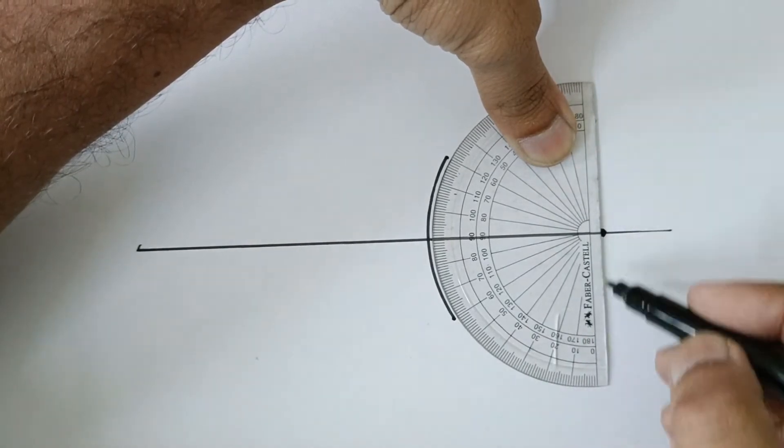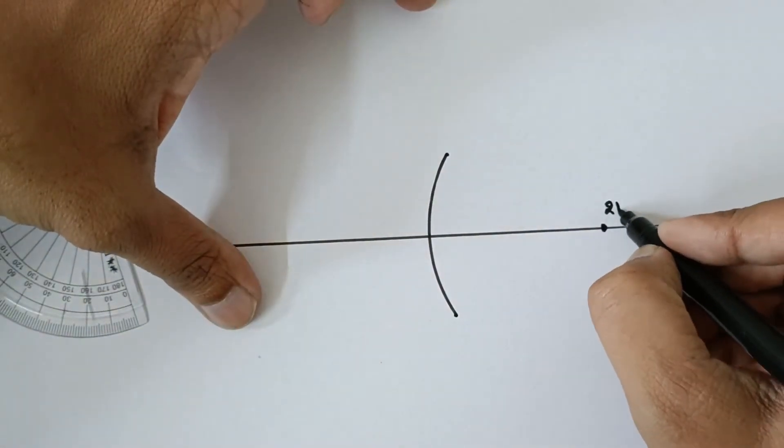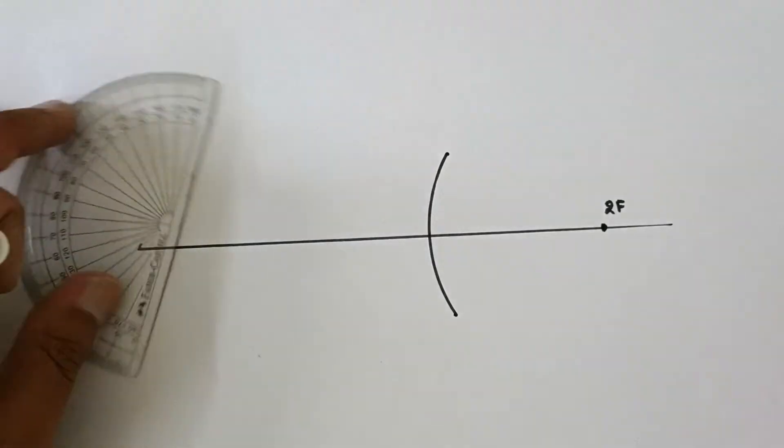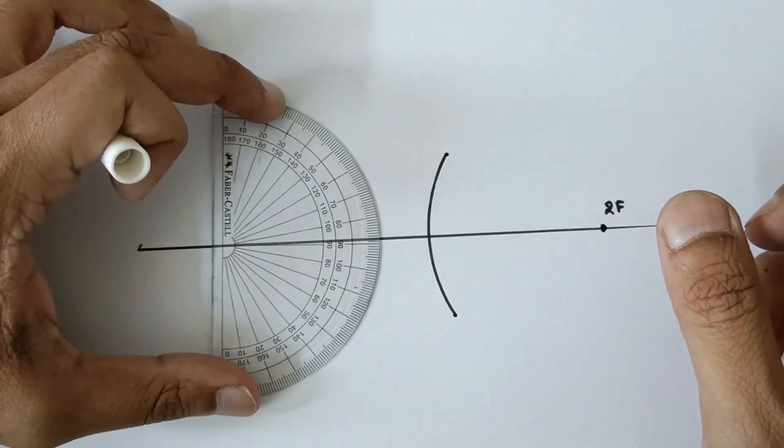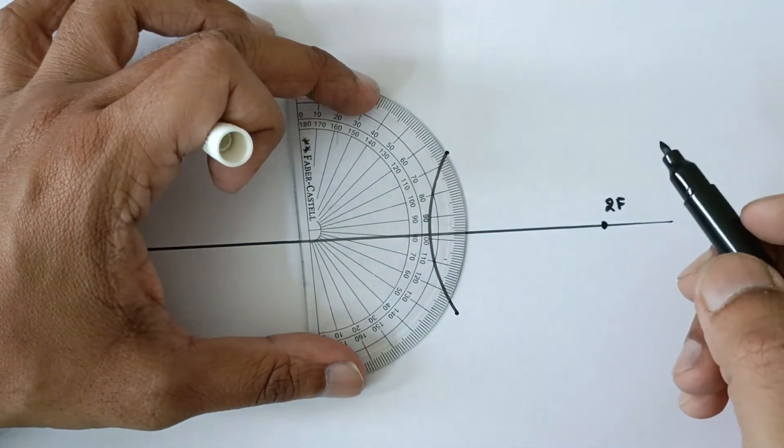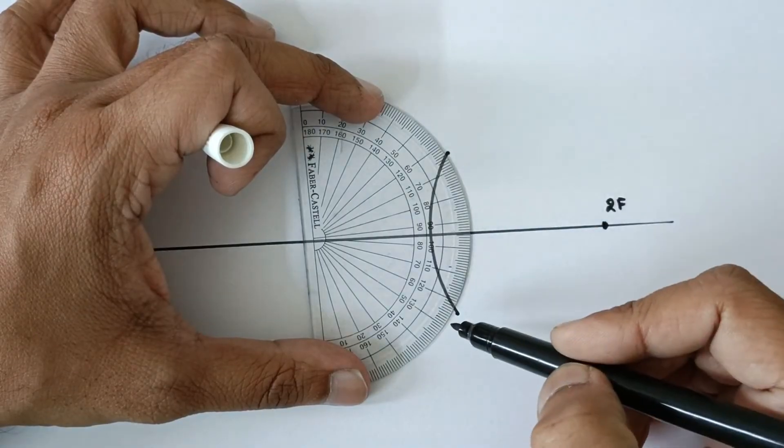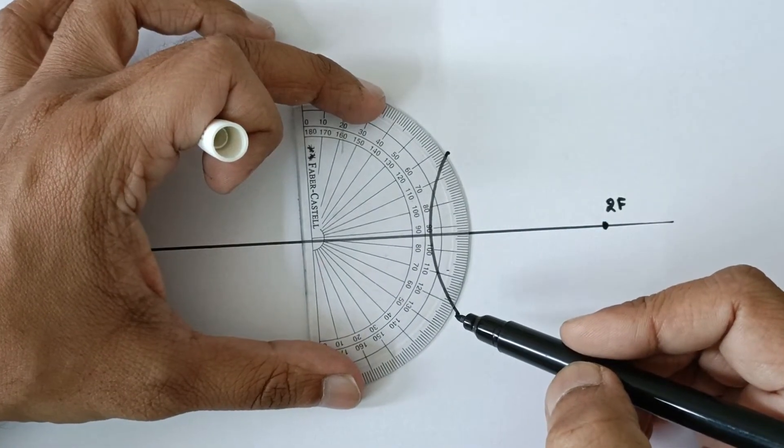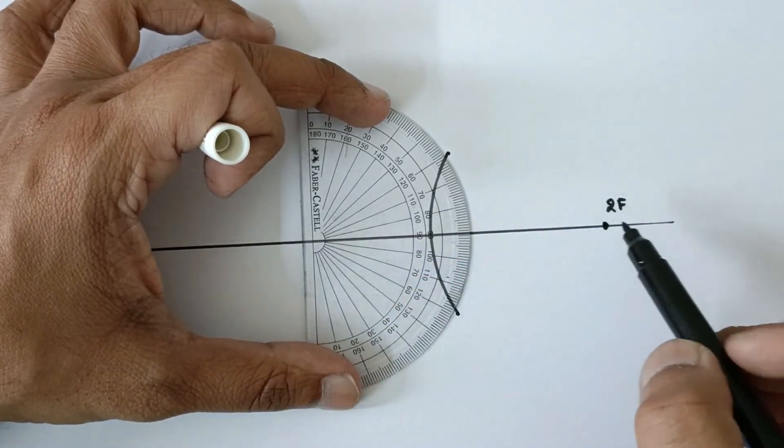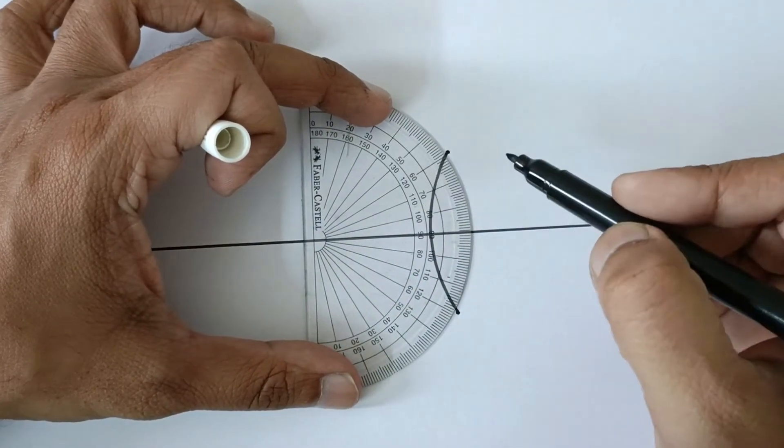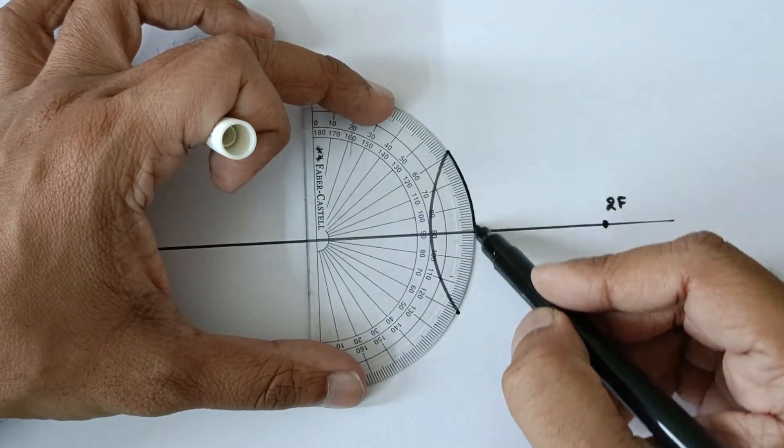The midpoint wherever it strikes, mark this point and call this as 2F. Now from the other side again, put the protractor such that these two points get covered up and the 90 degree line should match with our principal axis. You can move the protractor such that these two points must be covered fully.